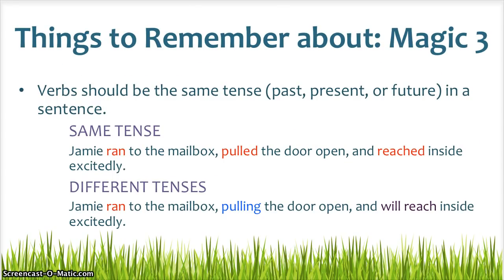Here are some things to remember about magic three sentences. Number one, verbs should be the same tense in a sentence — that means each of your verbs should be either past, present, or future. For example: "Jamie ran to the mailbox, pulled the door open, and reached inside excitedly." Ran, pulled, and reached are all past tense verbs, so the sentence makes sense. However, look at this example: "Jamie ran to the mailbox, pulling the door open, and will reach inside excitedly." Those are three different tenses, and therefore those verbs don't make sense. We need to make sure that we always use the same tense when writing verbs in a sentence.